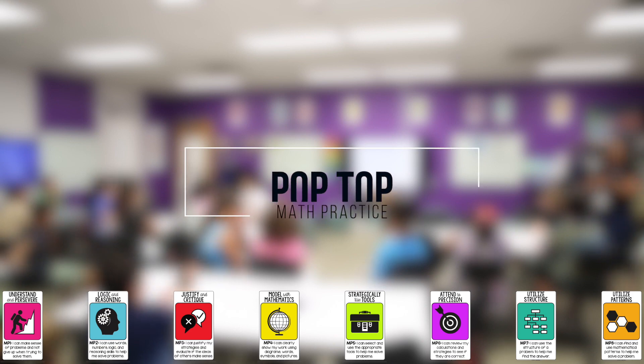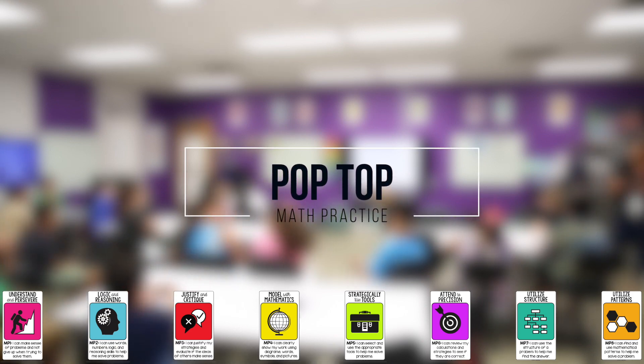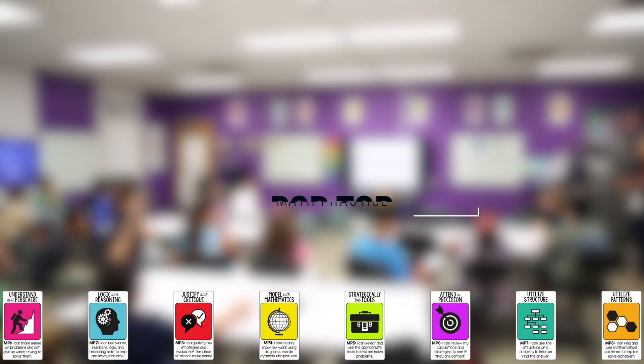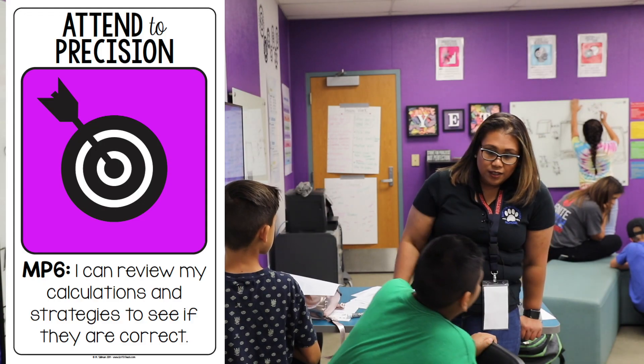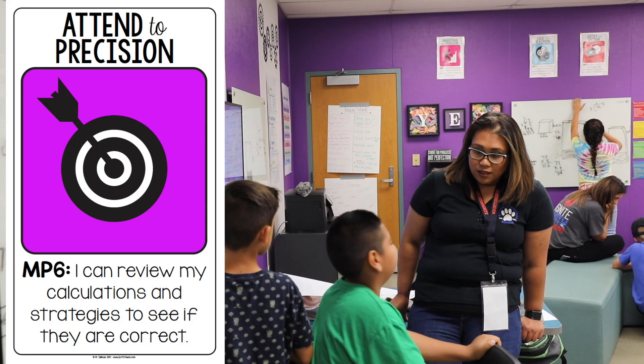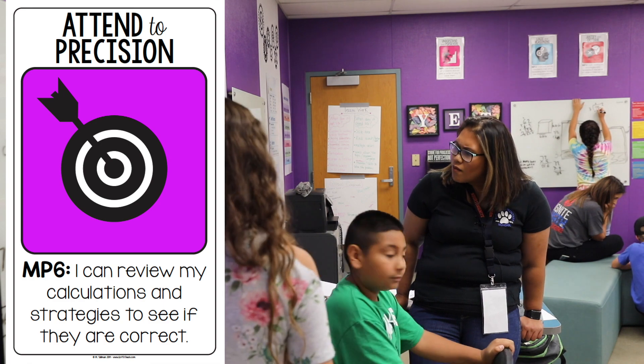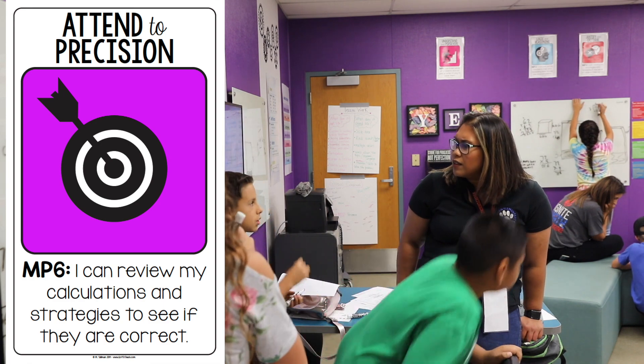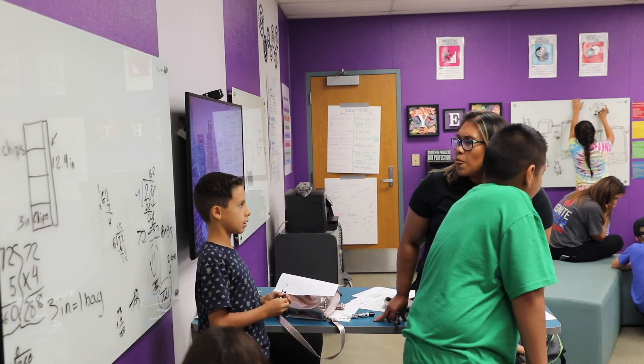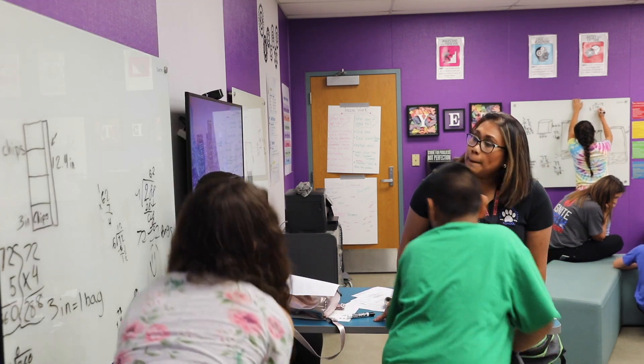Then we moved over to the math practice part, and I found this important because I was able to zero in on the parts that I really wanted them to learn. So we did math practice 6 and 2. In math practice 6, that's where they used precision — where they thought of the strategies and really went back: did I do this, did I do that, to help with their calculations.